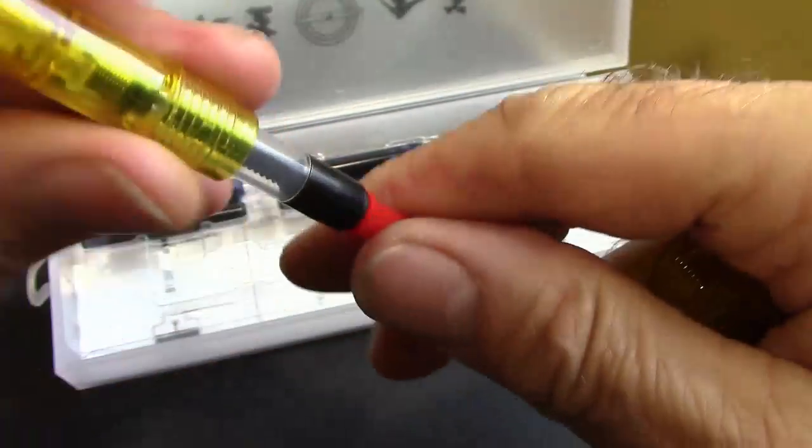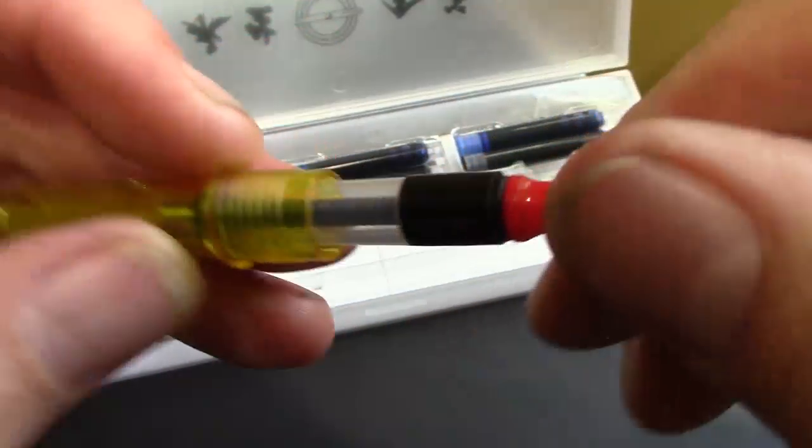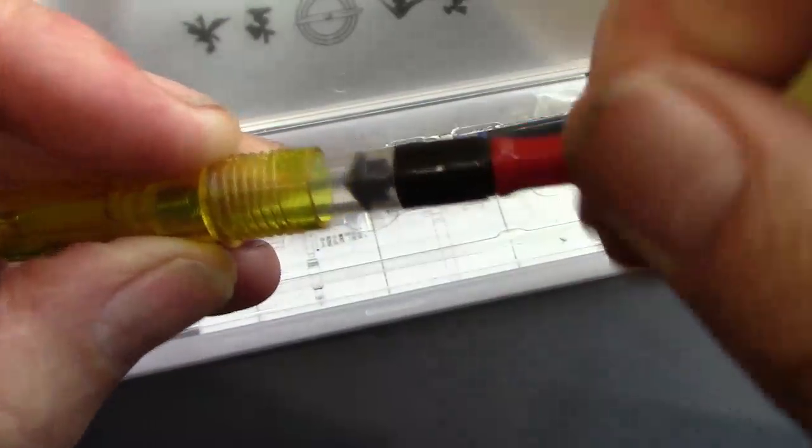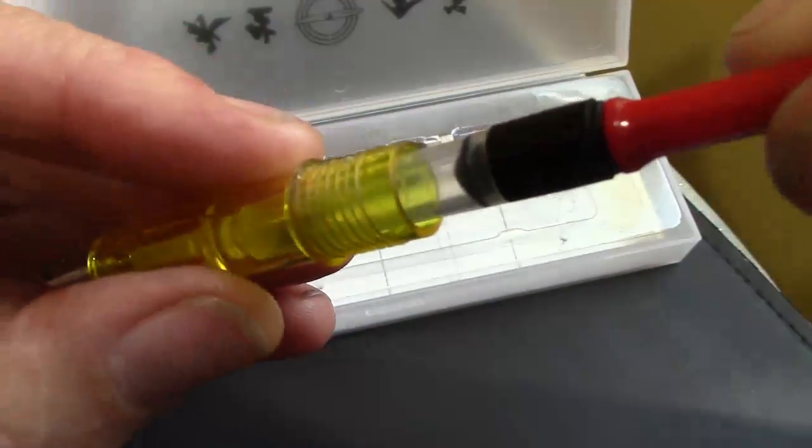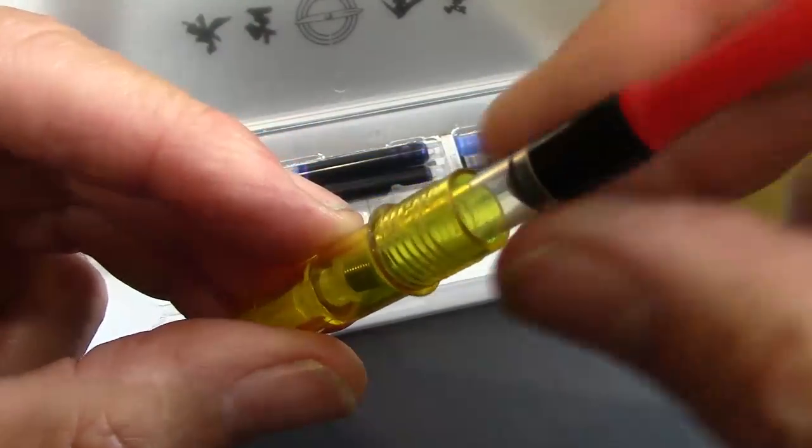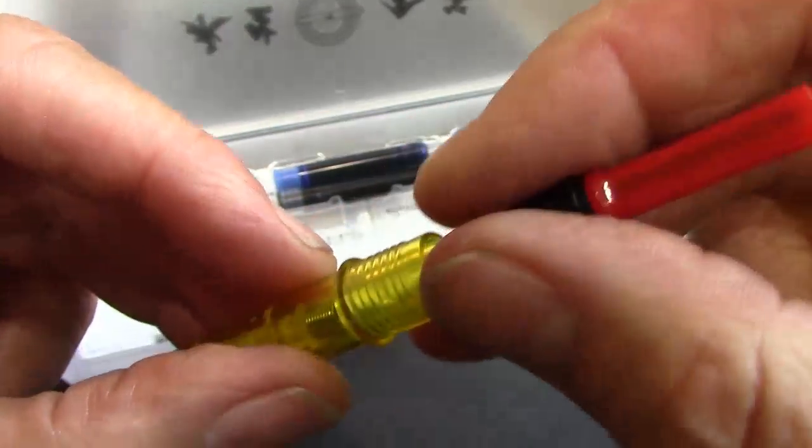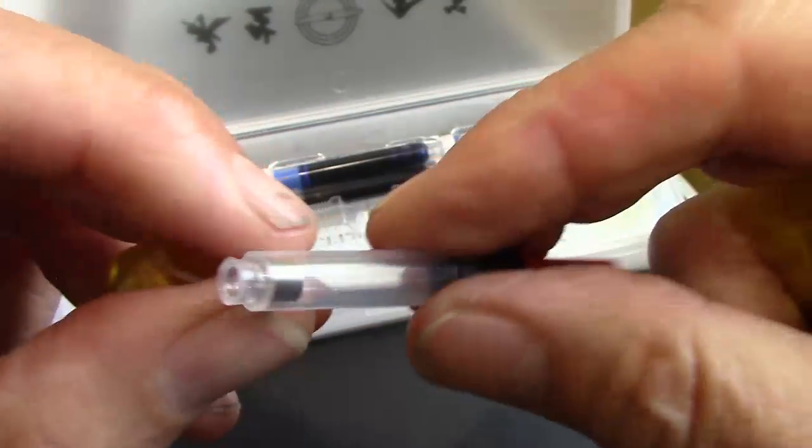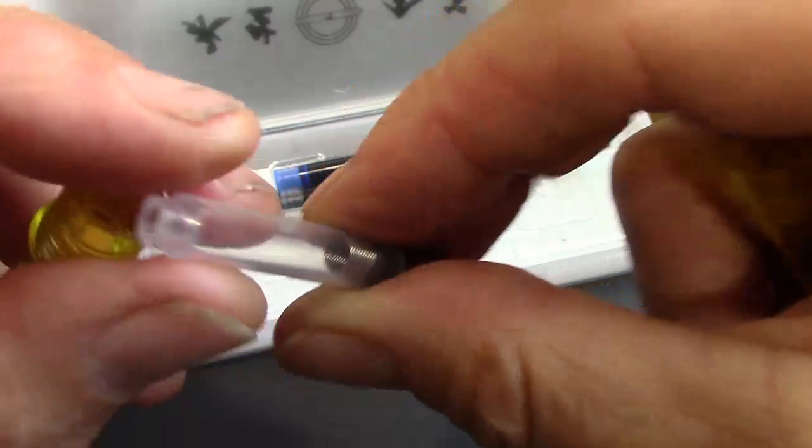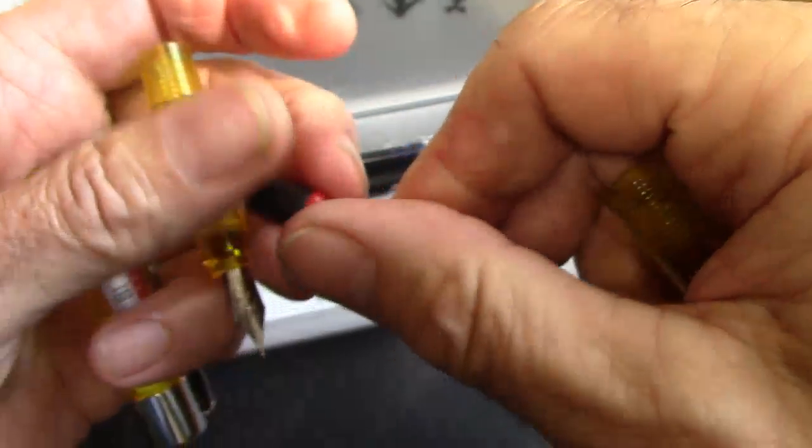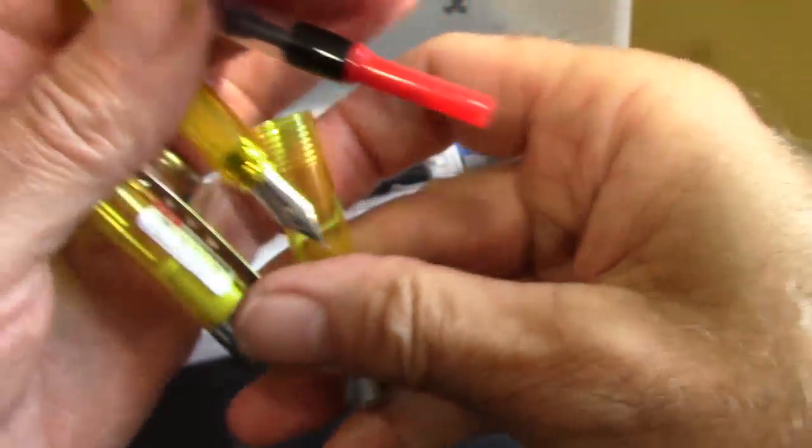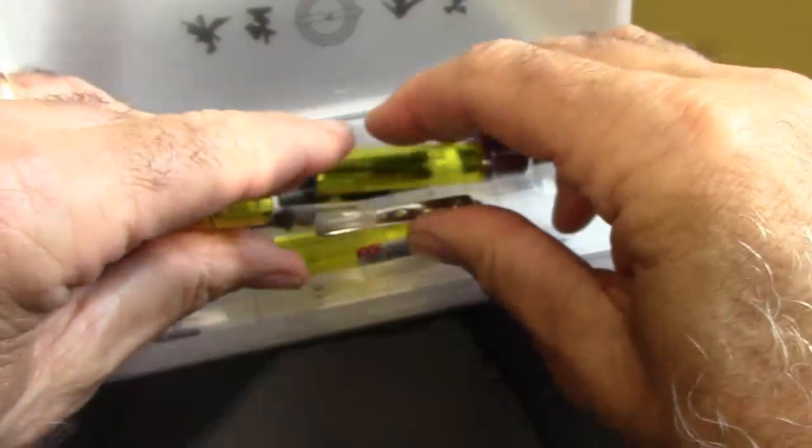It just unscrews and you can see there's a little spring in there, a little agitator that is in some of these converters to keep the ink from sticking to the sides and maybe starving the ink flow. It comes out very easily and you can see that large opening there at the bottom. So that's it, I'm going to do a flush and figure out what kind of ink I want to put in here and see how it writes.